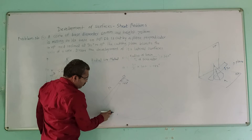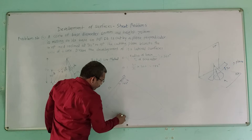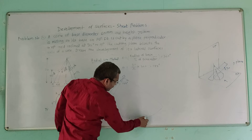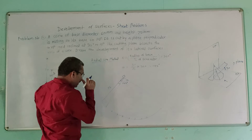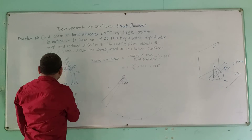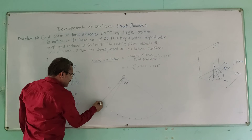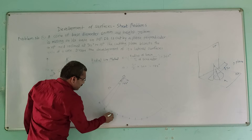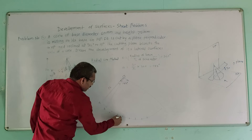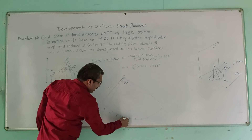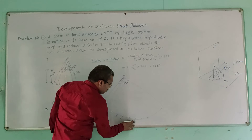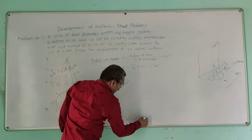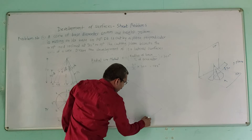Mark the 8 divisions as 1, 2, 3, 4, 5, 6, 7, 8 along the arc. Name these points A, B, C, D, E, F, G, H, and back to A. Draw all generators from O' to each of these points on the arc.